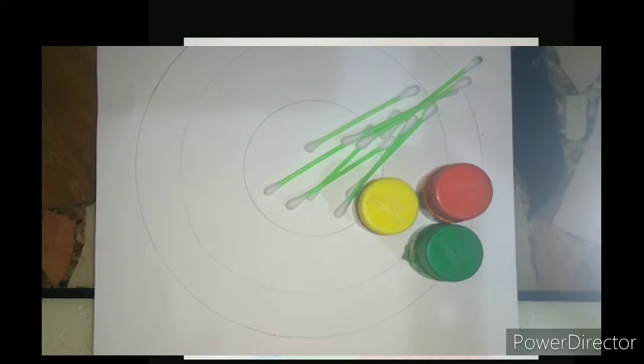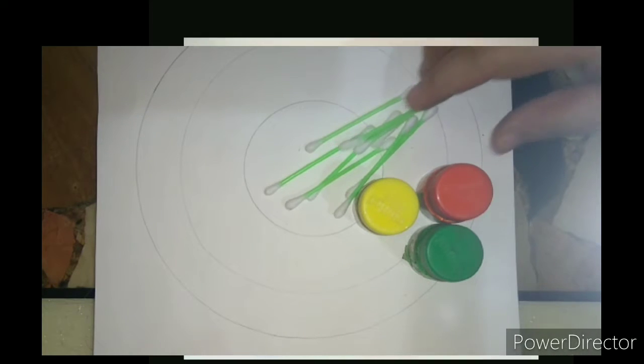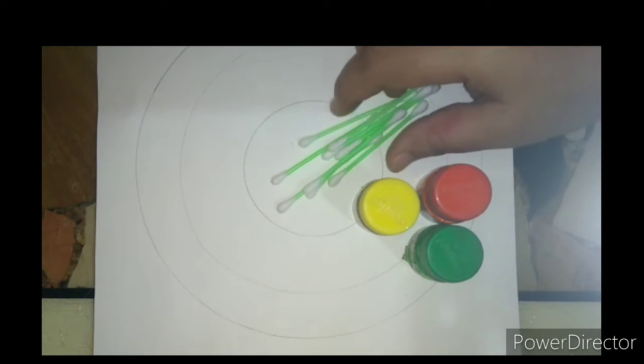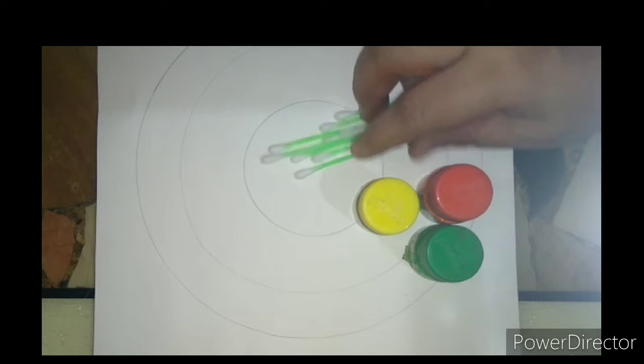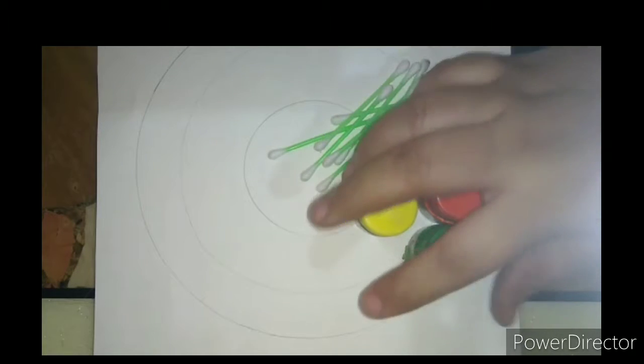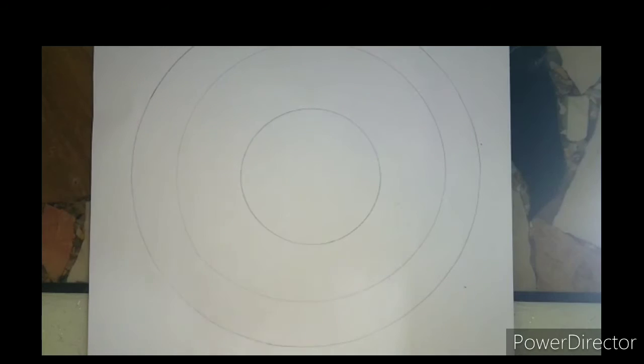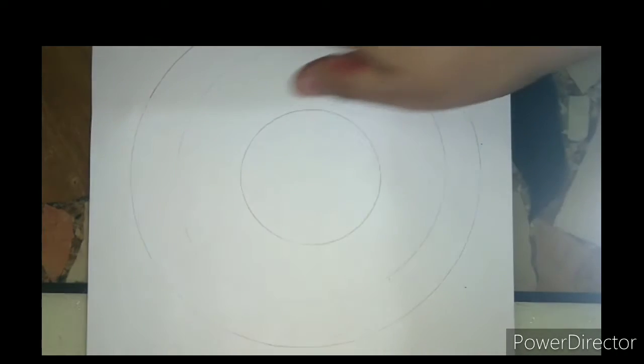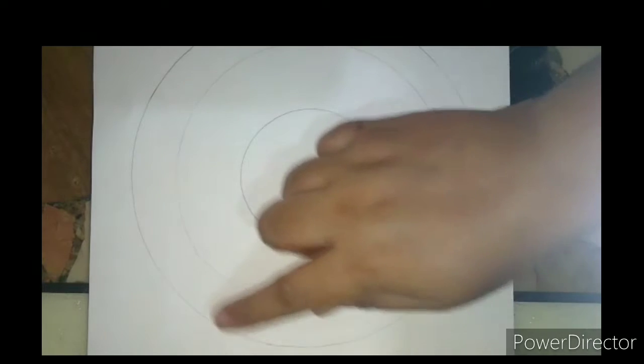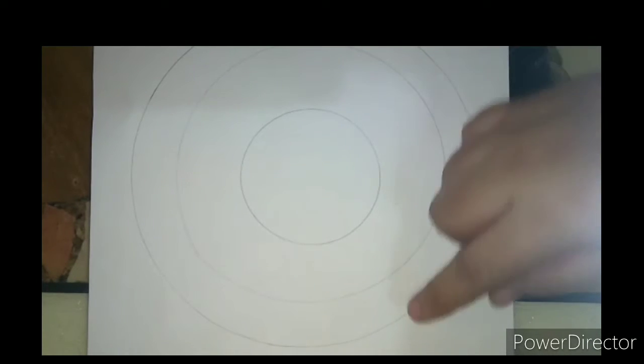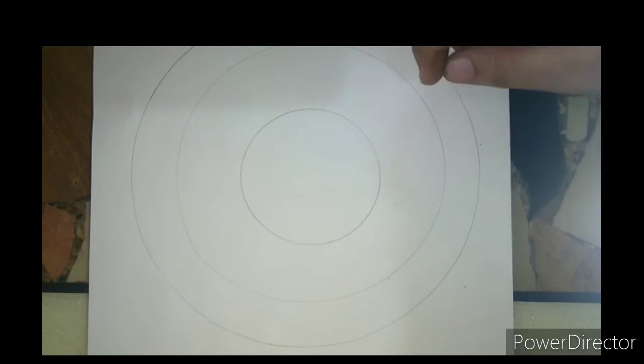So my nursery kids, we are going to do cotton bud painting. You need cotton bud and some poster colors. Kids, first draw any object in circle shape or triangle shape and start coloring.